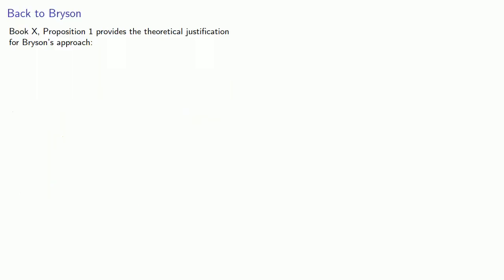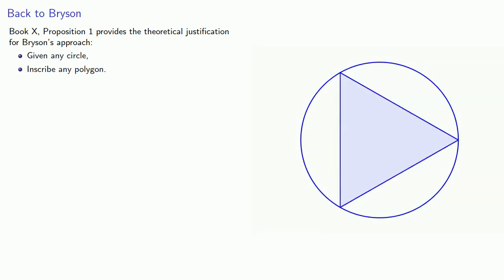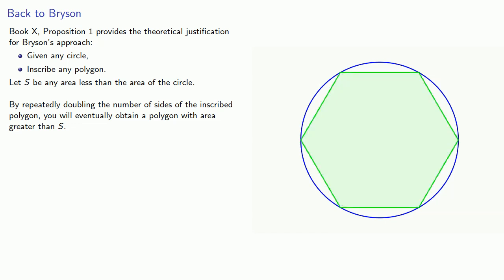Book 10, Proposition 1, provides the theoretical justification for Bryson's approach. Given any circle, inscribe any polygon, and let S be any area less than the area of the circle. By repeatedly doubling the number of sides of the inscribed polygon, you will eventually obtain a polygon with area greater than S.